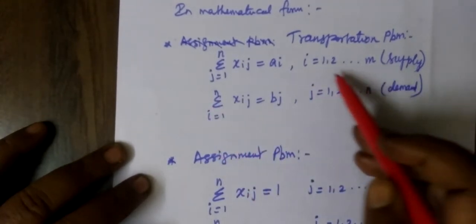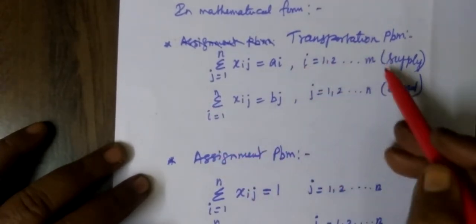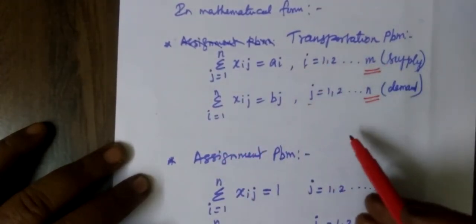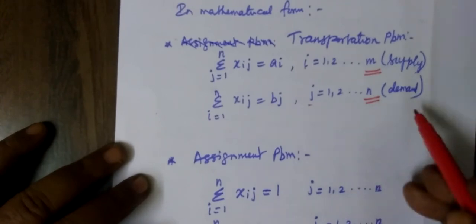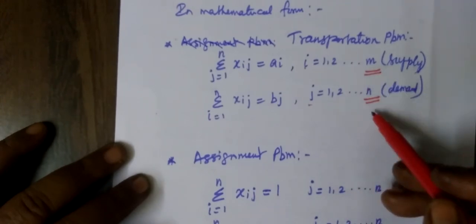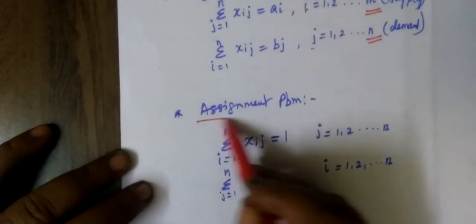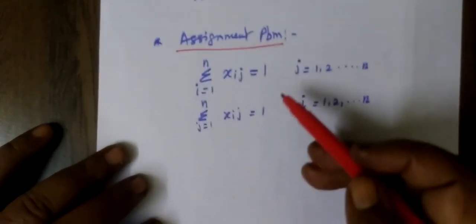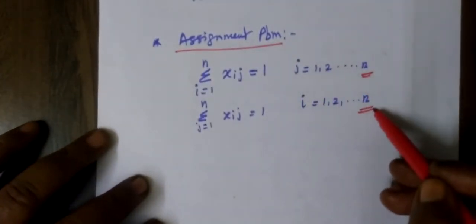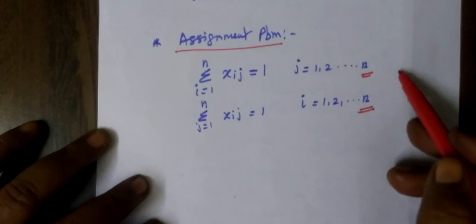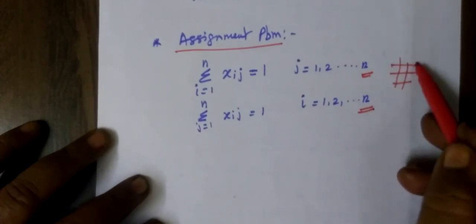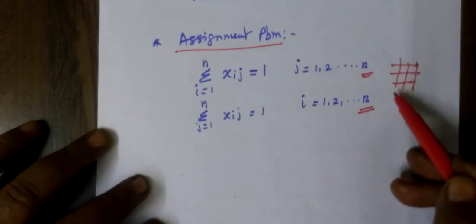In transportation problem, the i value is M and the j value is N, so the number of rows and columns need not be equal. Whereas in assignment problem, the i value and j value follow the same method — rows and columns are equal.